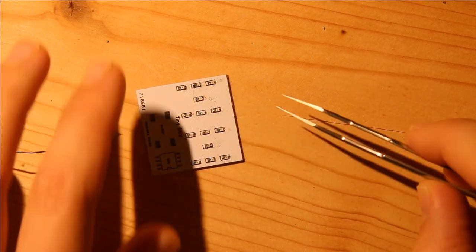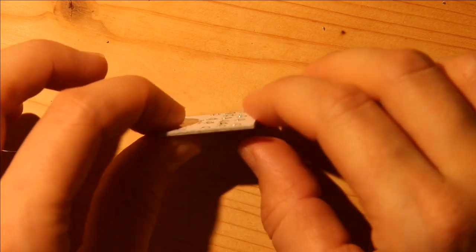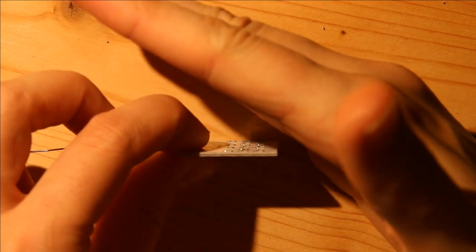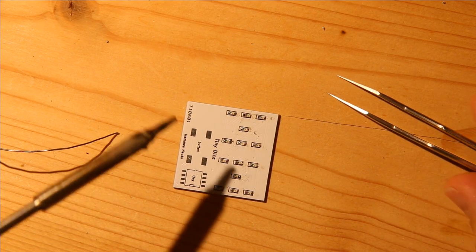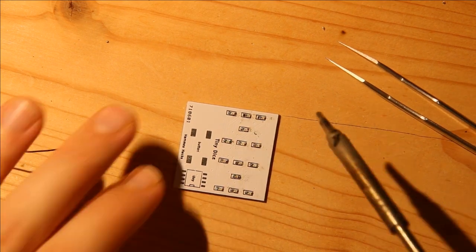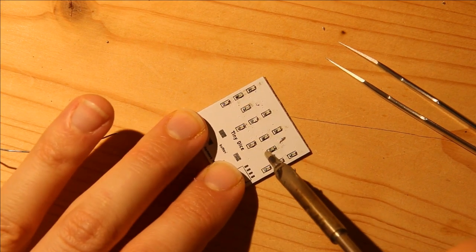So this one is tombstoning a little bit, which I don't know if you can see it, but it's laying kind of like this on the board. So I'm going to try to fix that. I'm actually going to remove it and redo it.